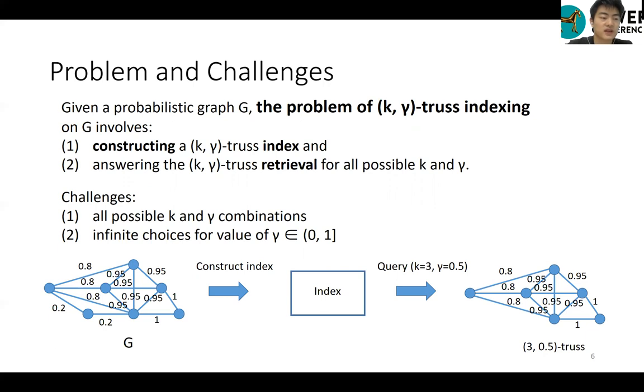However, efficient k-gamma-truths indexing and retrieval presents significant challenges, mostly due to the enumeration of all possible k and gamma combinations. On the other hand, as there exist infinite choices for a value of gamma, building a decomposition for many values of gamma would lead to combinatorial blow-up and inefficiency.